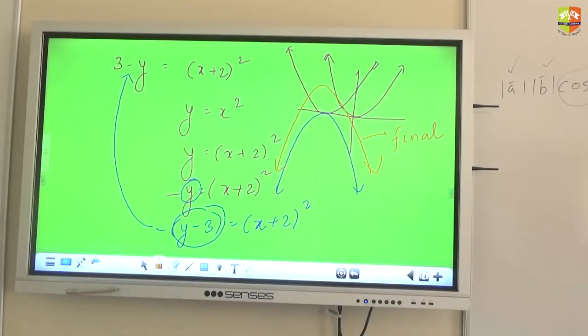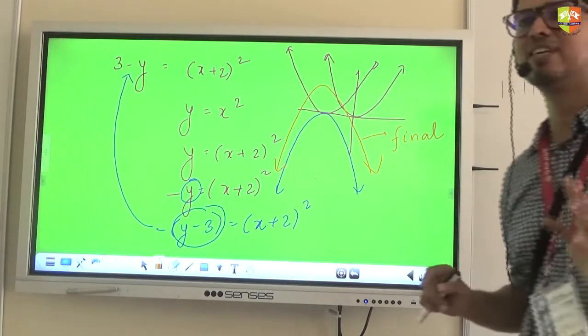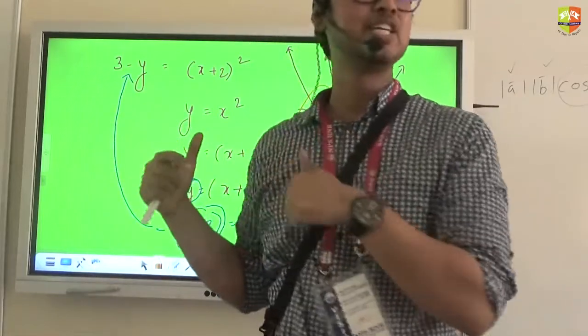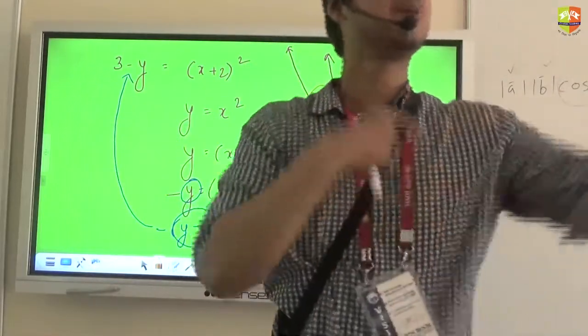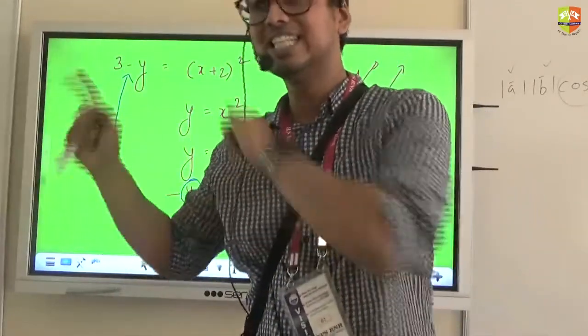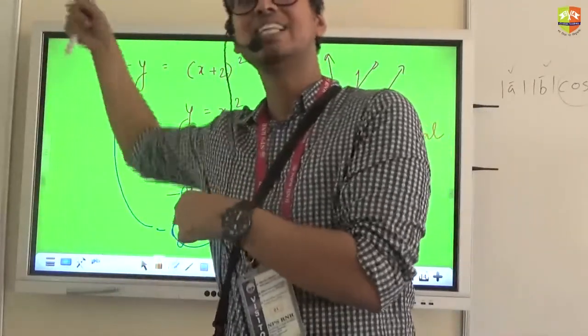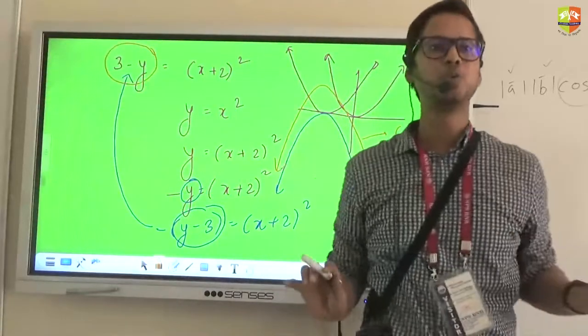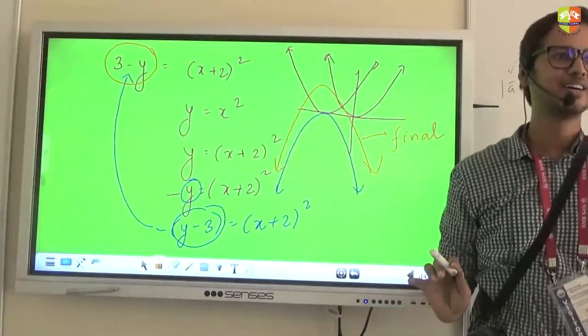And this is my final result. I ended up drawing the same graph but this time the approach was slightly different. So it doesn't matter in this case whether you do y plus 3 and then change y to minus y or you do y with minus y first and then change y with y minus 3. Ultimately you have to reach this expression somehow.